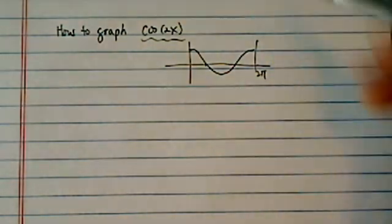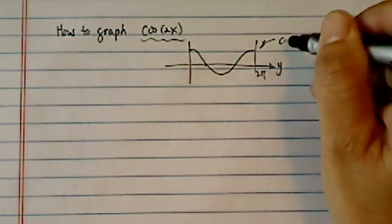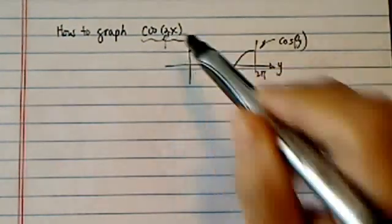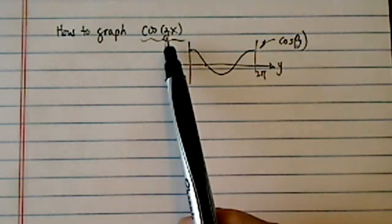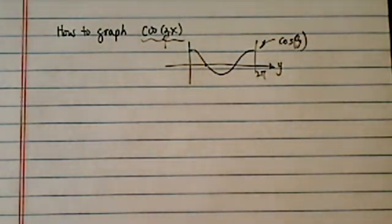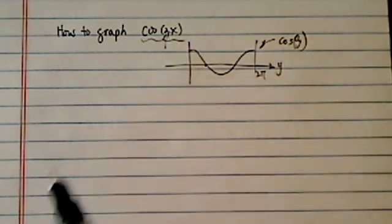Now cosine of, if this is y, then this curve is cosine of y with no modulation in the front. When we put a coefficient here, 2, in front of the variable, then the curve gets shrinking or stretched depending on whether the coefficient is bigger than 1 or smaller than 1.